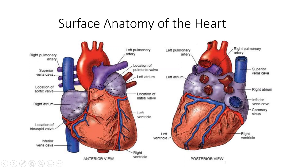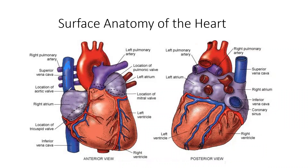Here we have the right pulmonary artery. We have the superior vena cava, and the superior vena cava actually drains blood from the head, the neck, and the shoulder into the right atrium. This is the structure I'm talking about — this is the superior vena cava. It dumps the blood into the right atrium.